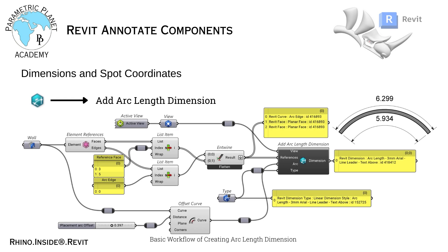In this lesson, we are going to explore the workflow for creating an arc length dimension in Revit using Grasshopper. To demonstrate this, we have created a simple curved wall element and we will be working on creating the arc length dimension for both the outer and inner arc edges of the wall. So without further ado, let's get started.